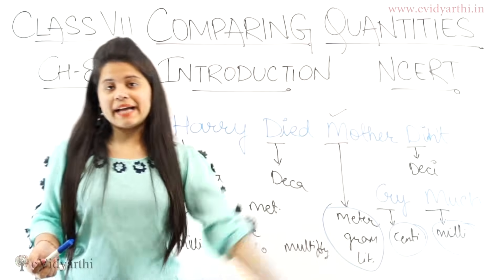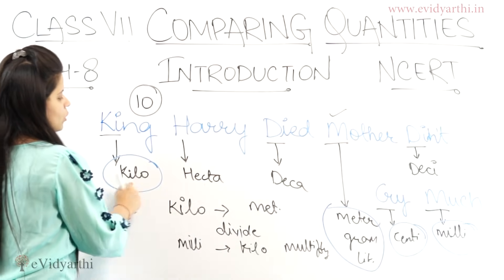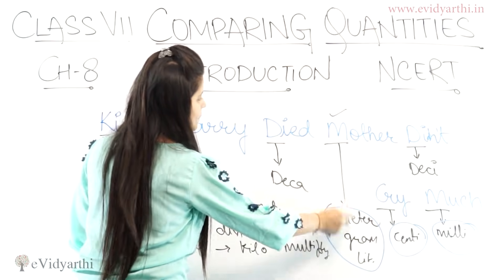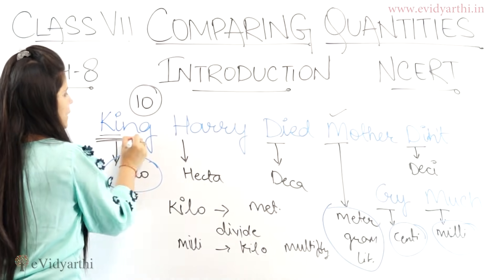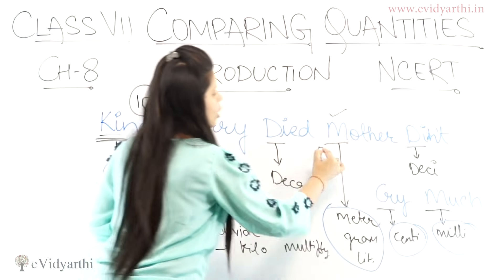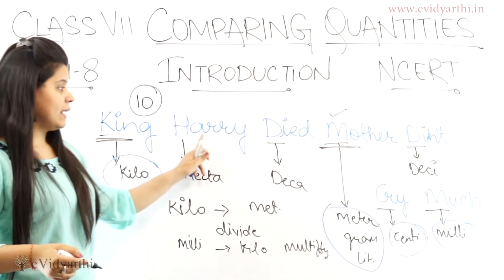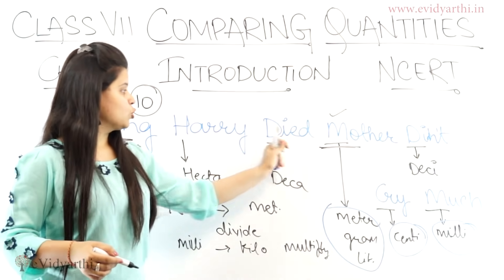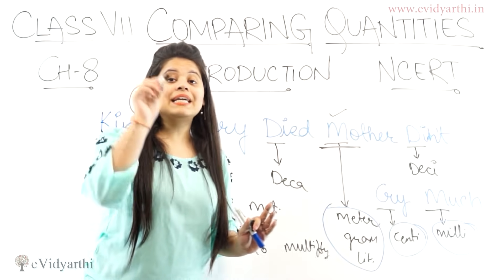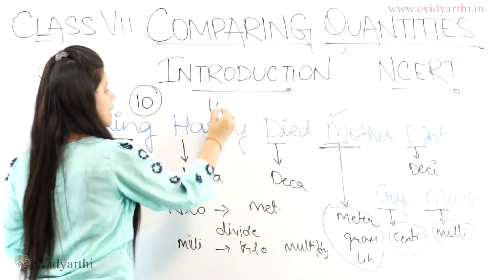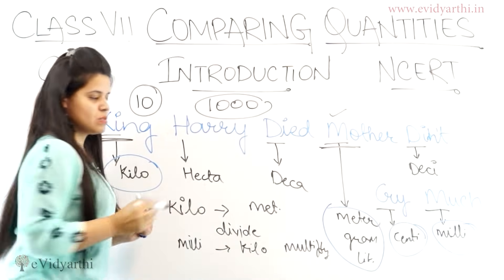What does this mean? Here we have kilo, hectare, decameter. Now if you are going from kilometer to meter, how many tens will there be? 1, 2, 3 — that's 3 tens, meaning 3 zeros. So this will be one thousand. This means one thousand.